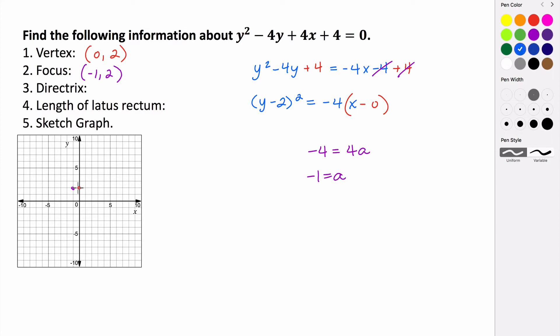That also tells us that our directrix is 1 unit to the right of our vertex. And it's going to be a vertical line that passes through the value of x equaling 1. So that means that it's an equation of x equals 1. So that's the equation of the directrix there.